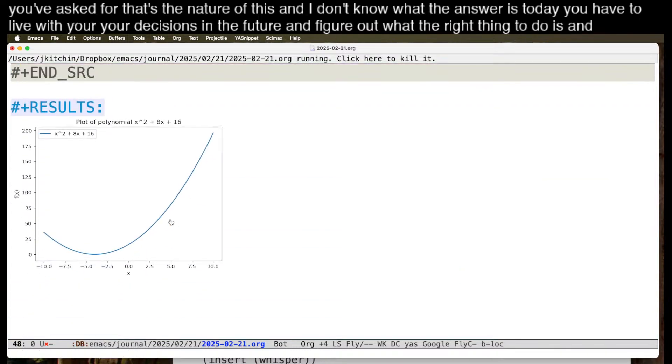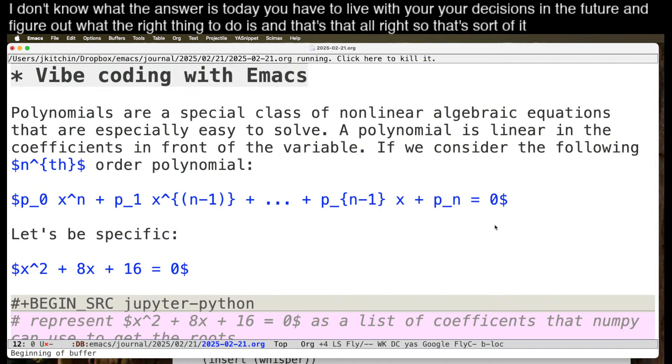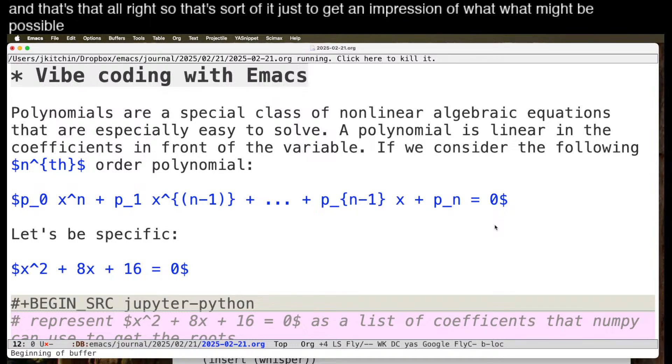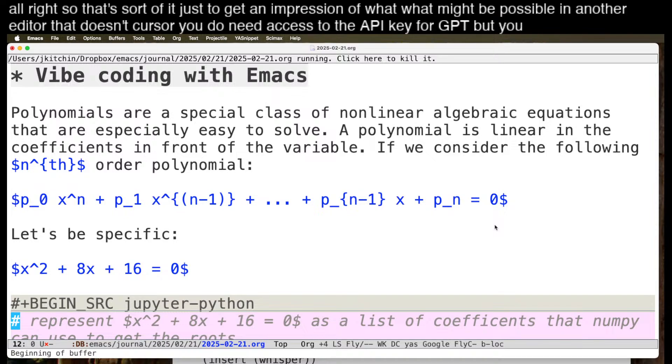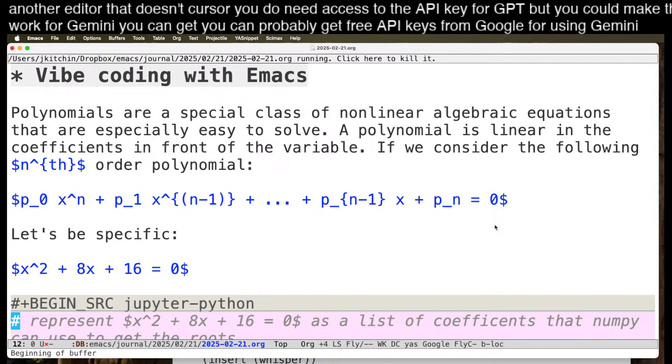And that's that. All right, so that's sort of it. Just to get an impression of what might be possible in another editor that isn't Cursor. You do need access to the API key for GPT, but you could make this work for Gemini. You can probably get free API keys from Google for using Gemini, and of course you could use Ollama.